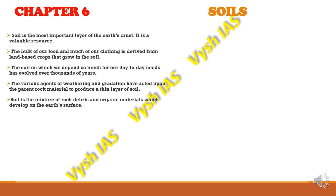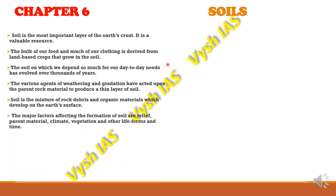Soil is a mixture of rock debris and organic materials which develop on the earth's surface. Agents of weathering like wind and water break down the parent rock material into small fine materials of sand or soil. The major factors affecting the formation of soil are relief, parent material, vegetation, climate, other life forms, and the time period.